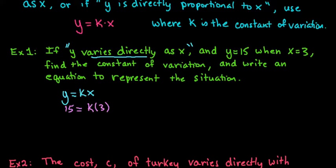So if you wanted to, you could have solved for k first and say that k is equal to y divided by x, or you can plug in the numbers, whatever is easier for you. And then we would just divide both sides by 3, and we see that k is going to be 5.